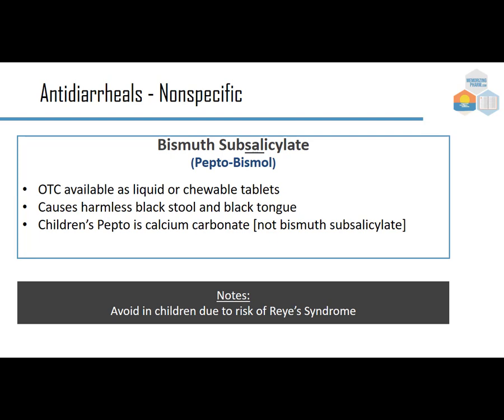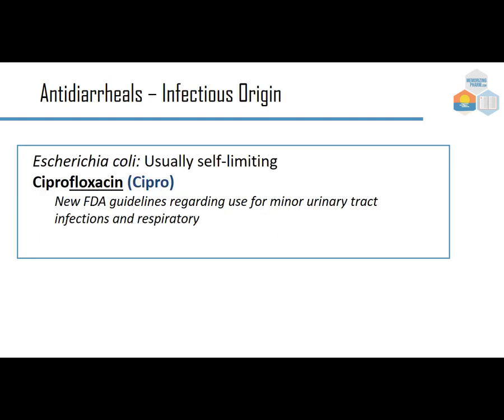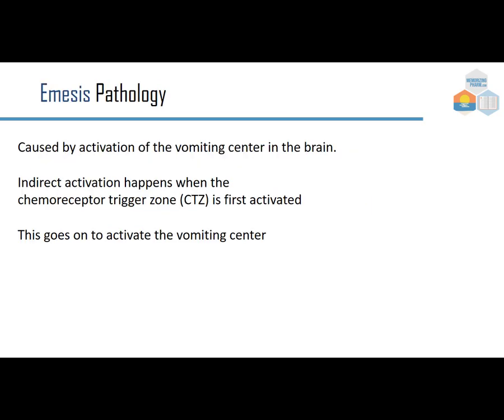Bismuth subsalicylate (Pepto-Bismol) is available OTC as liquid or chewable tablets. It causes harmless black stool and black tongue — patients should be warned. Children's Pepto is not bismuth subsalicylate; it uses calcium carbonate instead, because salicylates are avoided in children due to Reye's syndrome risk. For infectious diarrhea such as Salmonella or E. coli, it's usually self-limiting, but ciprofloxacin may be used.